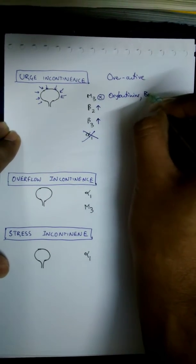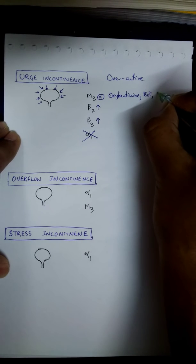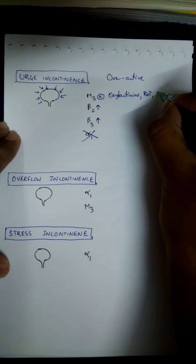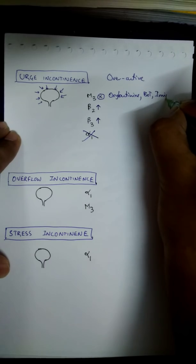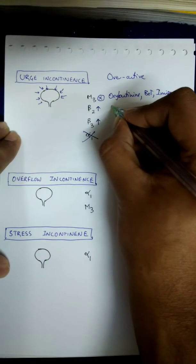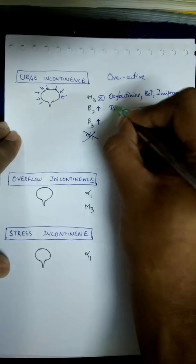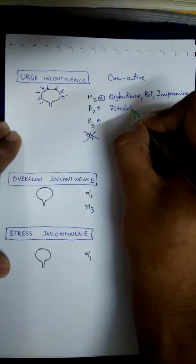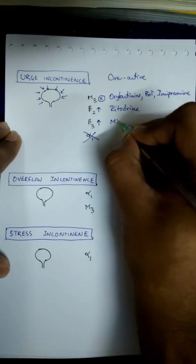Oxybutynin, botulinum toxin, and imipramine - a tricyclic antidepressant with muscarinic antagonist activity. The choice of drug for beta 2 agonist is ritodrine, and for beta 3 agonist is mirabegaron.